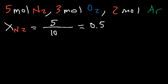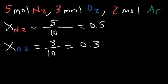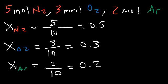The mole fraction of N2 is 0.5. The mole fraction is basically a mole percent in decimal form, so we have 50% nitrogen — 50% of the molecules is nitrogen gas. The mole fraction of O2 is three divided by ten, which is 0.3, so 30% of all the molecules is oxygen. The mole fraction for argon is two divided by ten, which equals 0.2, so 20% of all the molecules is argon.